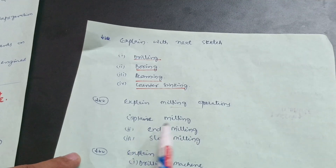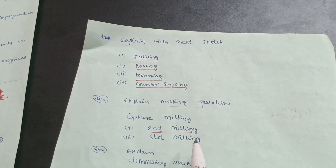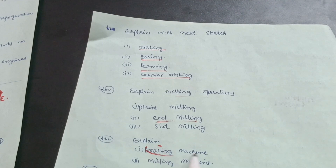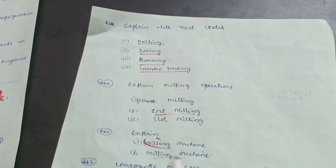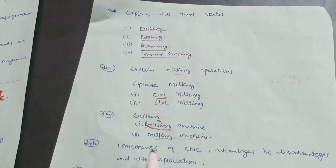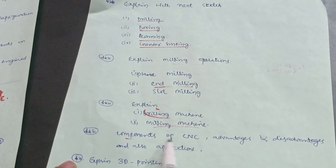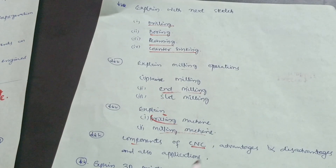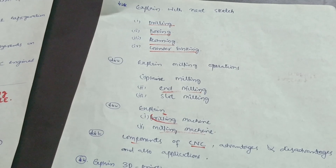For milling operations, focus on face milling, end milling, slot milling, and sometimes the differences between up milling and down milling. Also, explain the drilling machine with a neat sketch — it may be a five-mark question. Cover components of CNC, advantages, disadvantages, and applications of Computer Numerical Control, and also explain 3D printing. This content is enough to cover 20 marks in Module 2.